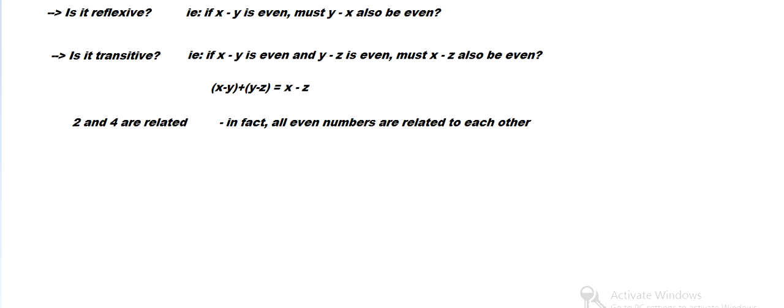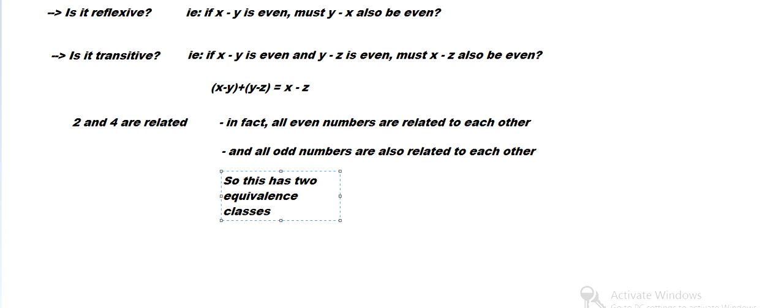And we call this equivalence classes - that's an important terminology. So this relation has two equivalence classes: the even numbers and the odd numbers. So it splits the numbers up into these two classes. And we'll see that all equivalence relations also split their universe into different classes.